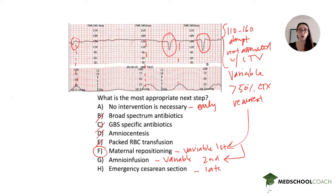This is a classic Step 2 CK question for your OB shelf or CK exam requiring fetal heart tracing interpretation. Remember to identify deceleration type based on key features — timing relative to contractions, gradual vs. abrupt onset — understand the causes, and know the management. Master these concepts and you'll be able to answer any fetal heart tracing question. Thanks so much for listening — that wraps up our question of the week.